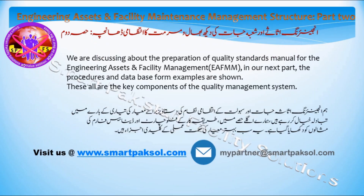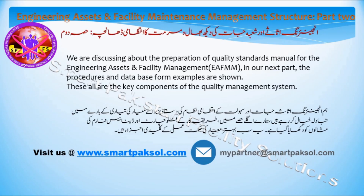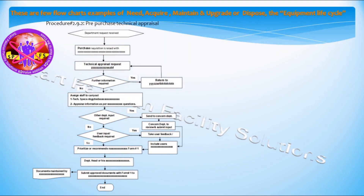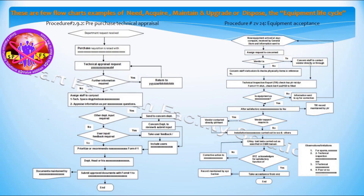We are discussing the preparation of a quality standards manual for the EAFMM. In our next part, procedures and database form examples are shown — these are all key components of the quality management system. A few flowchart examples cover the stages of need, acquire, maintain, and upgrade or dispose, which represent the equipment life cycle.